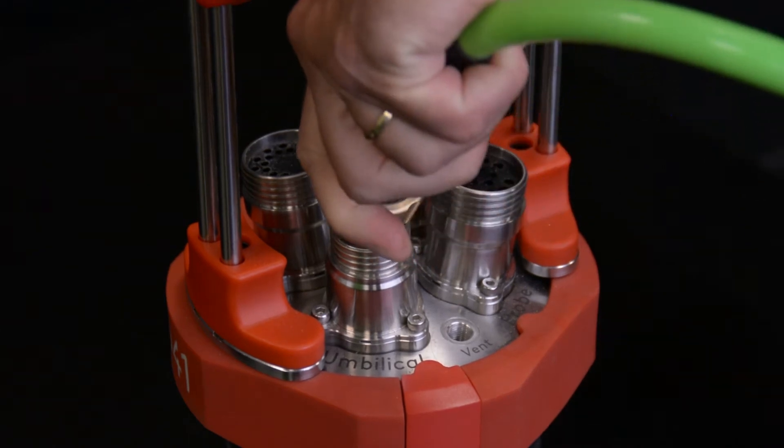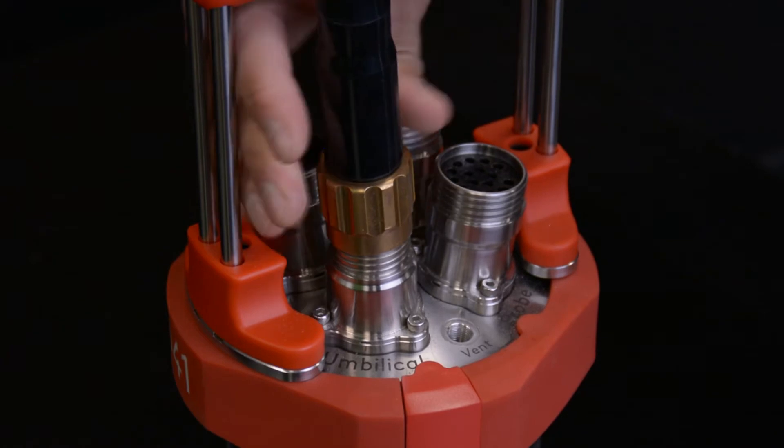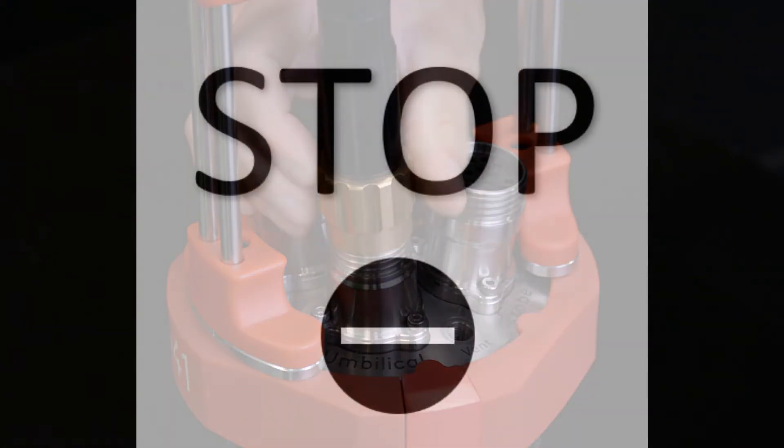Align these by eye as you mate the two connections and push gently downwards to ensure that the two halves are mating correctly. If you feel resistance, stop and recheck the orientation of the two connectors.